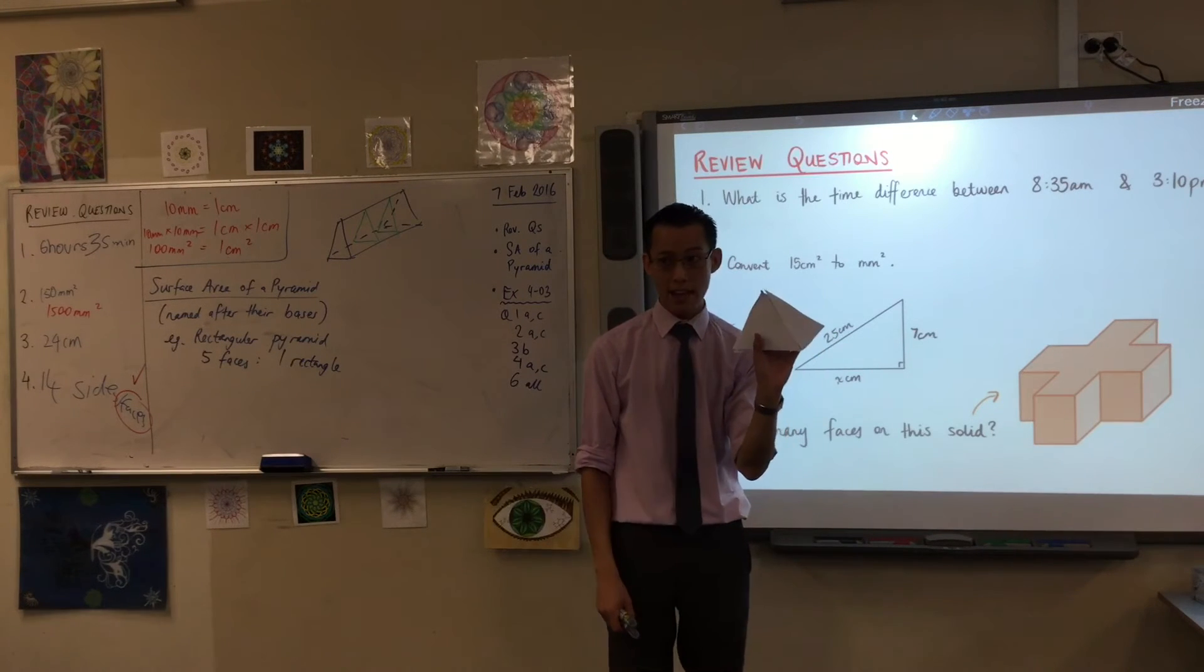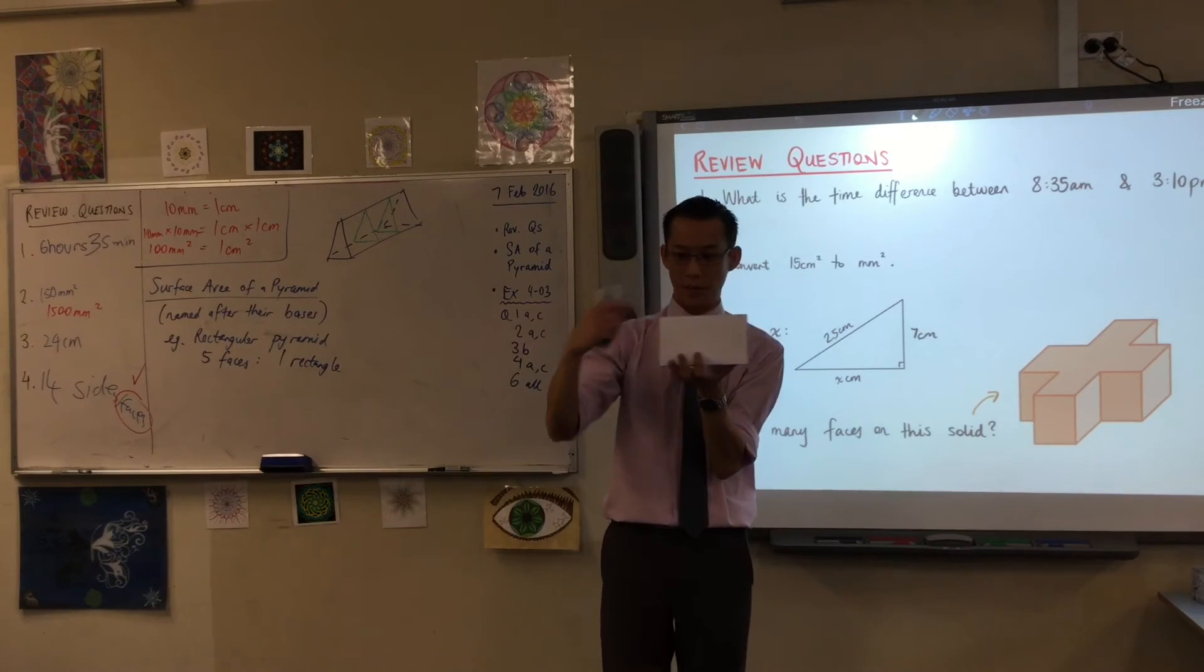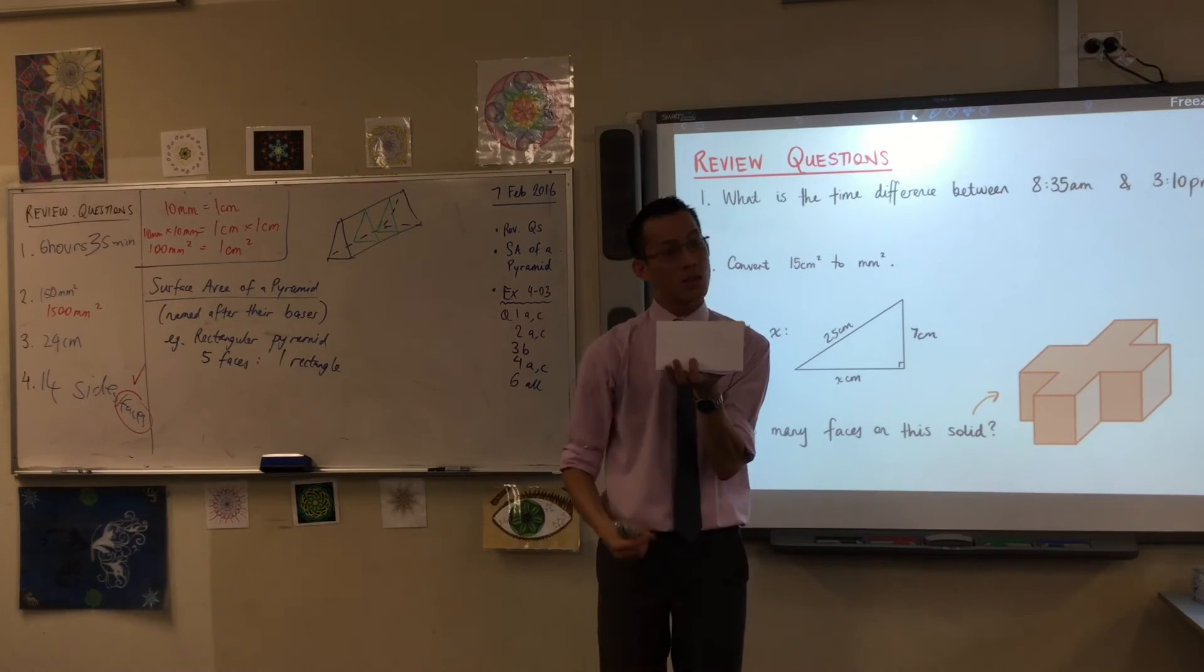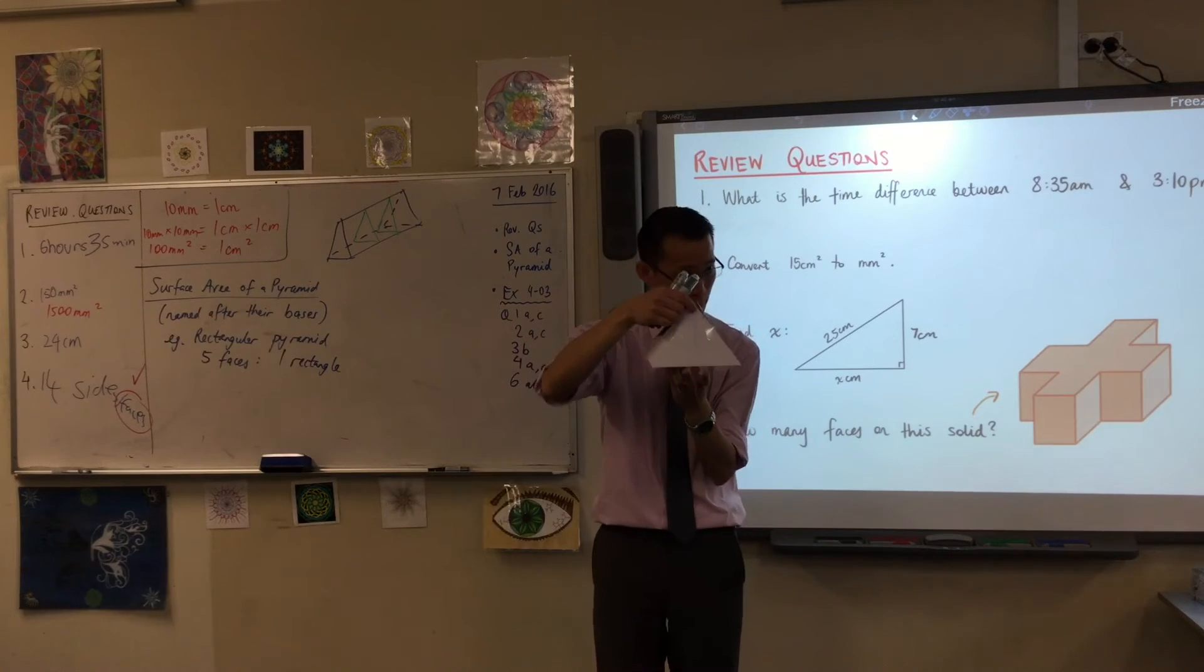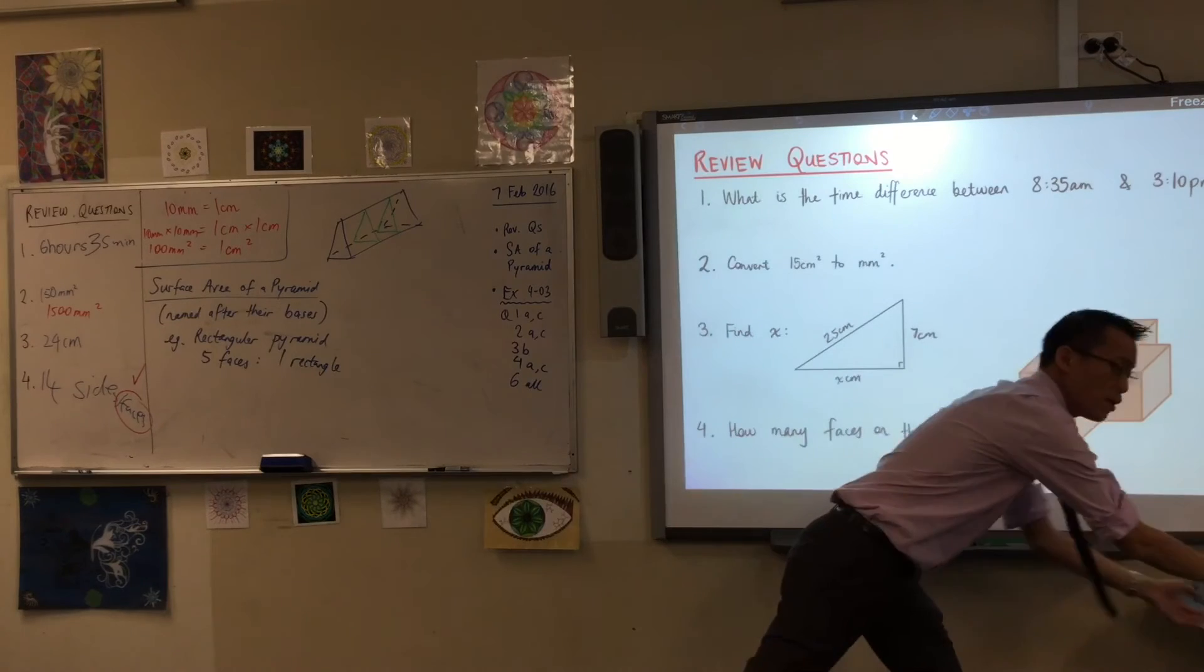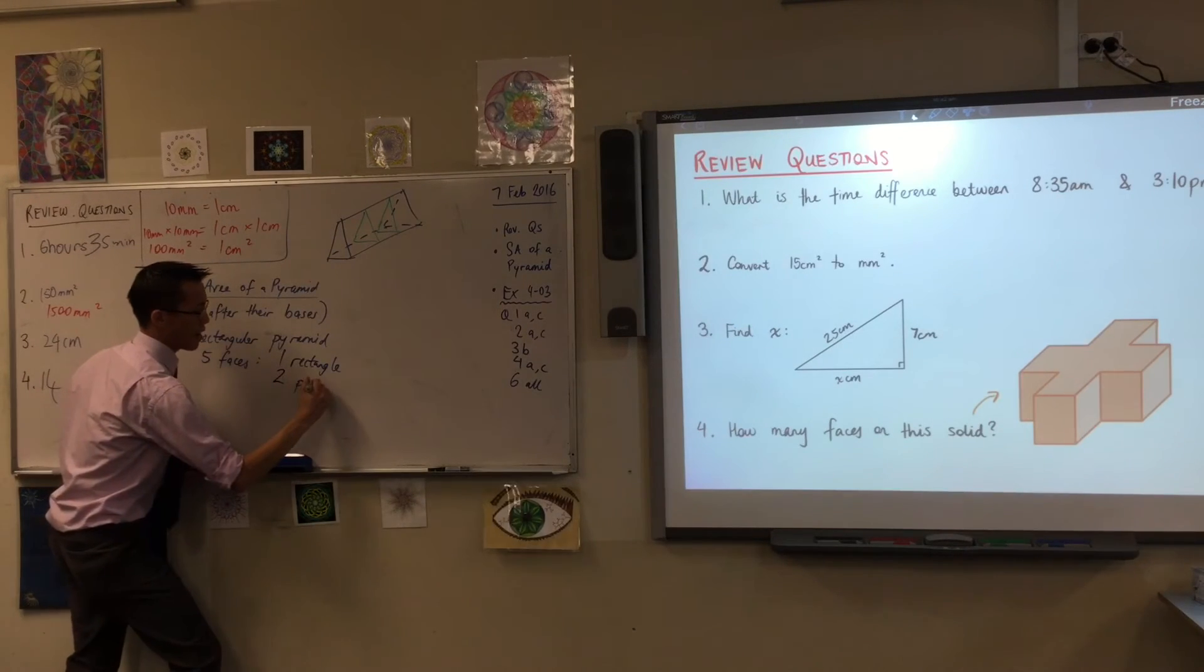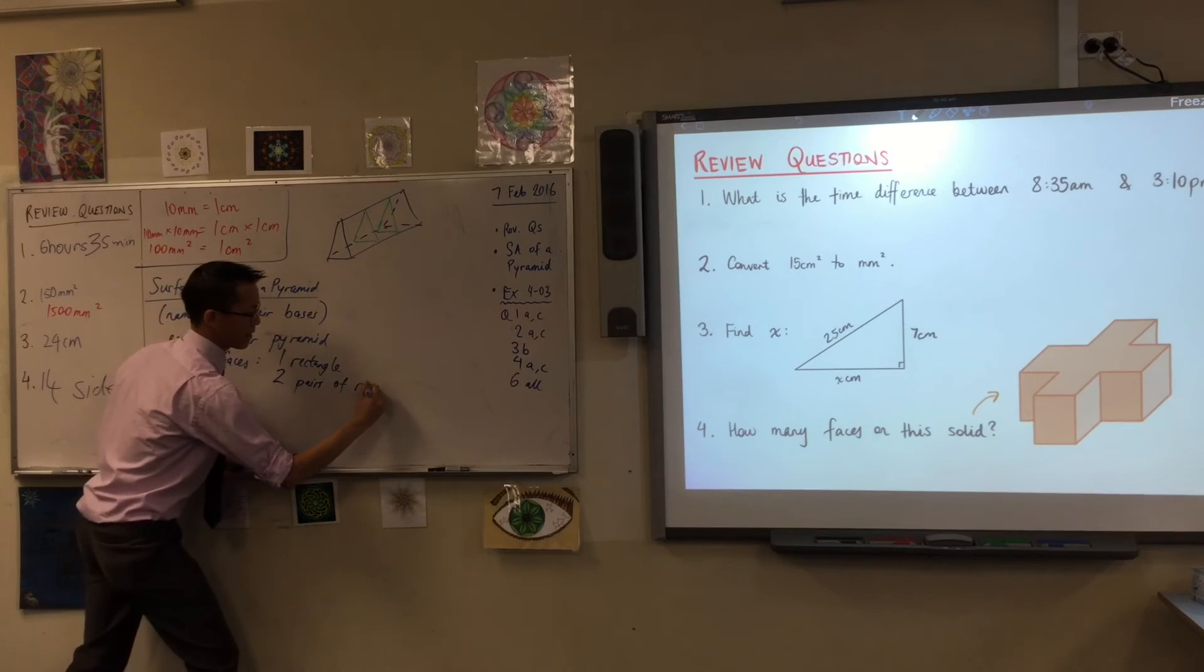So, they are all triangular, but in this case, because the base has different lengths up and down, the triangles that come from those sides are going to be different. Does that make sense? I do have pairs, though. So, I'm going to say two pairs of triangles.